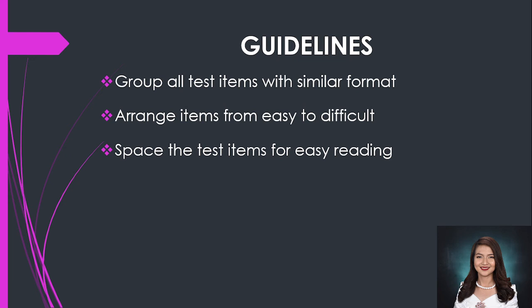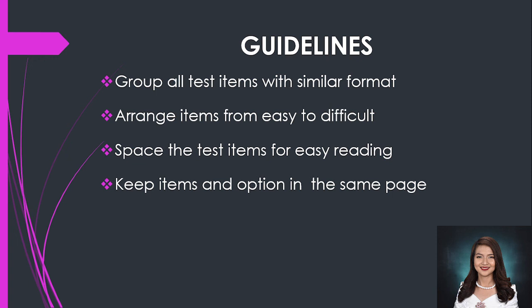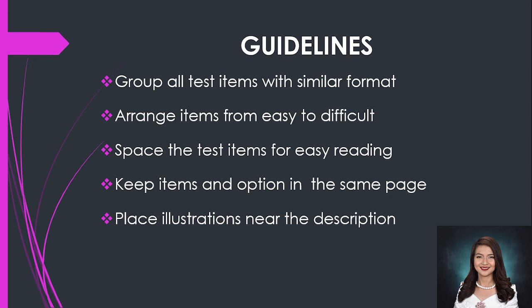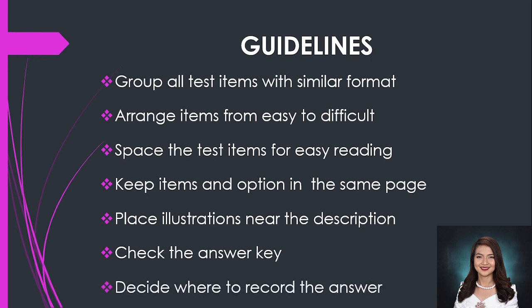Next, space the items for easy reading, especially if you will print the test for your students. If items are not spaced properly, students cannot read the question properly, and they may select the incorrect answer. Next, keep items and their options on the same page. Place illustrations near their descriptions — for example, if the question is about parts of the body, place the illustration near the question. Next, check the answer key, and lastly, decide where students will record their answers.